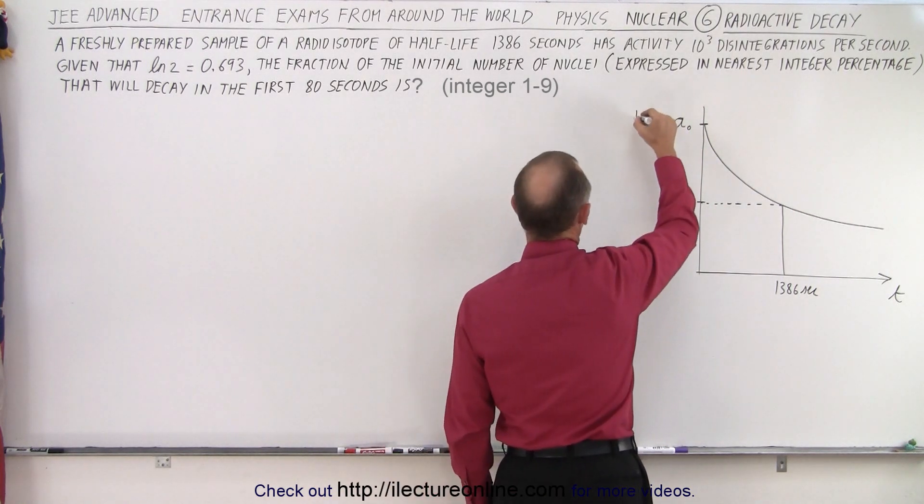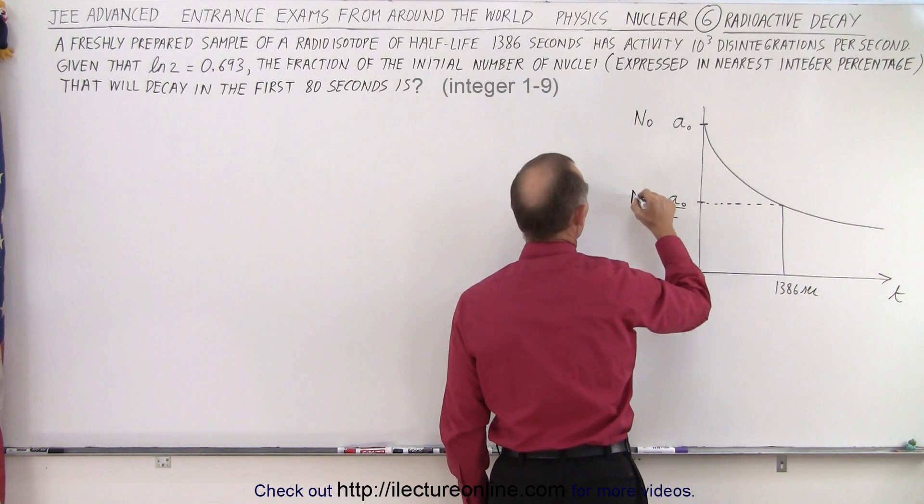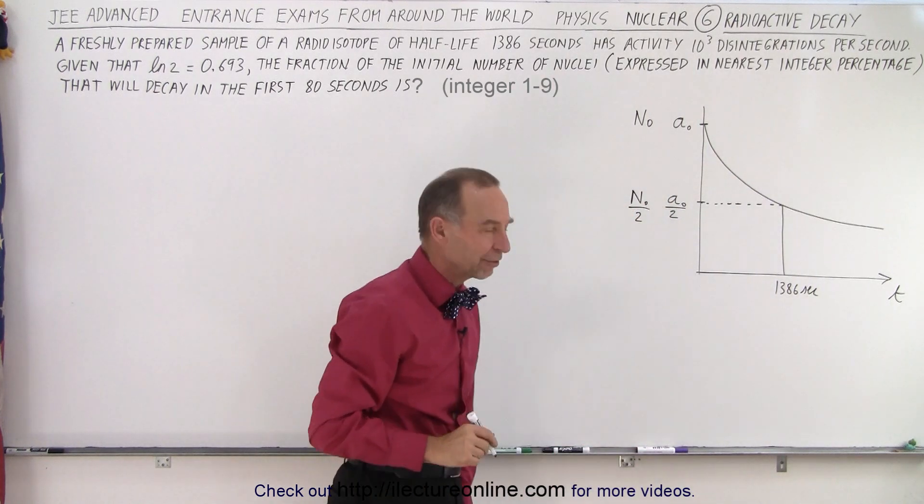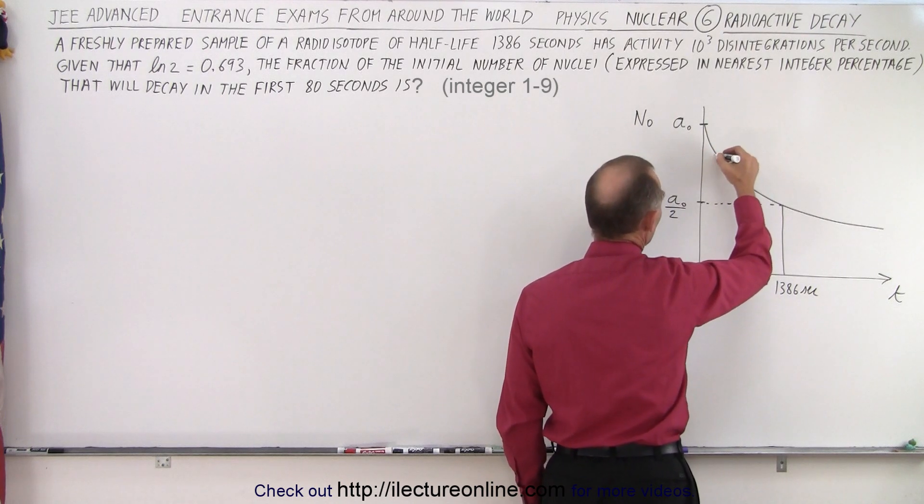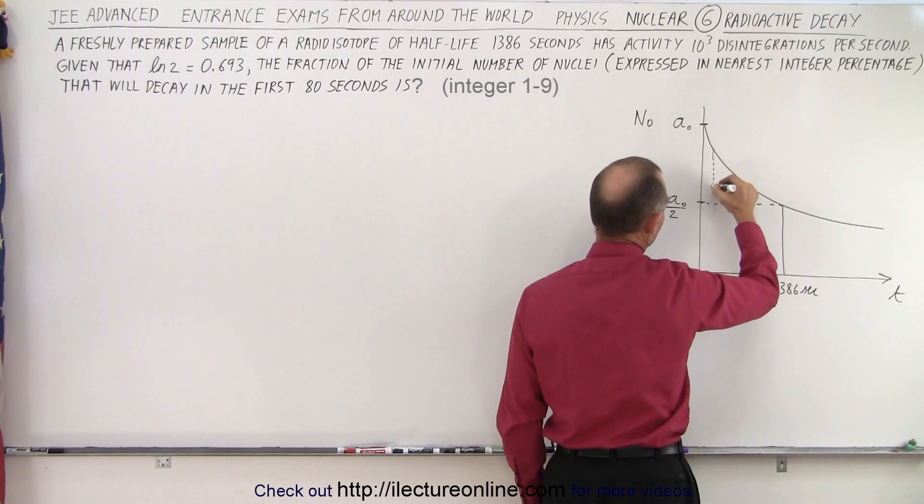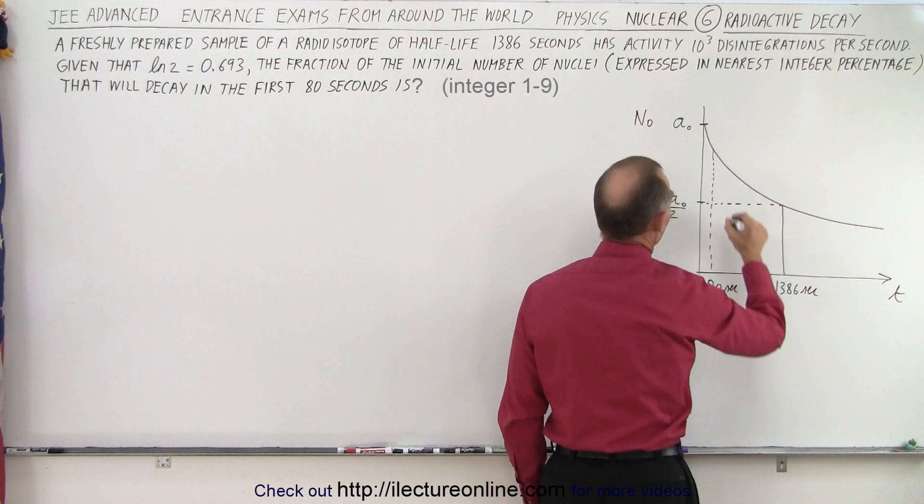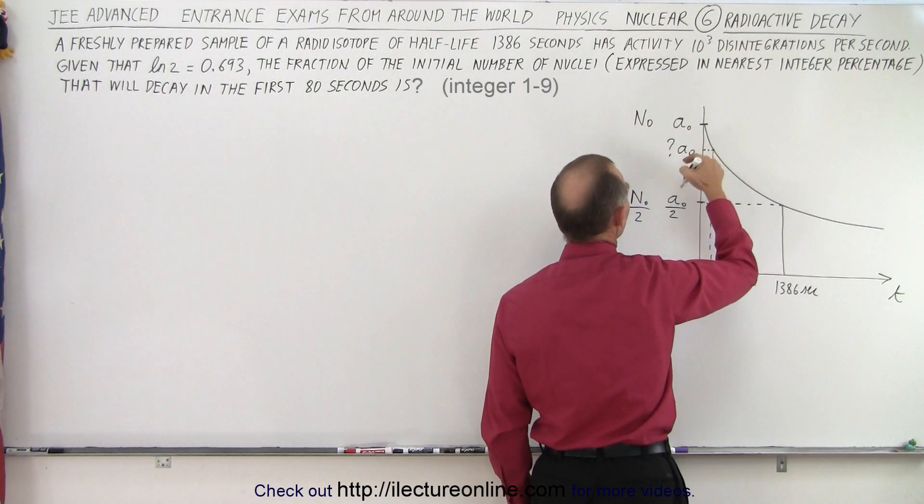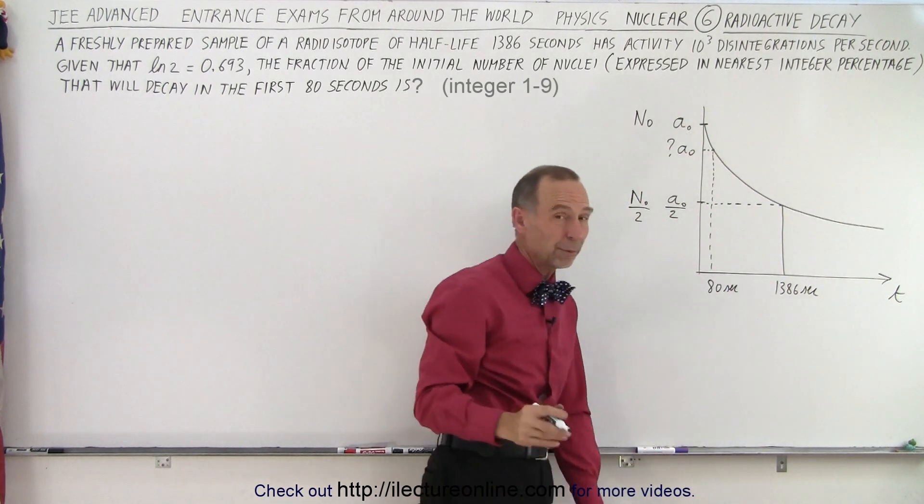You can also say that you start with a certain number of radioactive isotopes initially, call that N sub 0, and then you would drop down to only having half that many after one half-life has passed. So now they want to know what the percentage change is after 80 seconds. Now 80 seconds would be somewhere around here, and notice that we're looking for a number here at a sub 0, and of course whatever that is we subtract that from that and the difference in percentage would be what we're looking for.